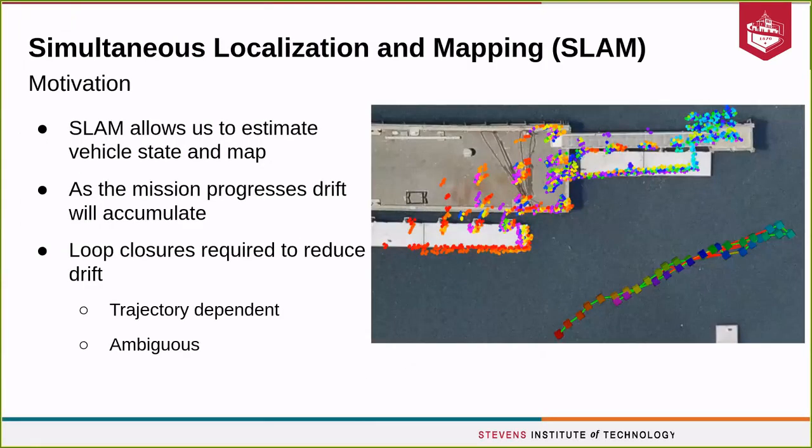First, let's talk about SLAM. SLAM allows us to estimate the vehicle state and map as we go. However, as the mission progresses, drift or error will accumulate in our state estimate. Loop closures are required to reduce drift. However, these are often trajectory-dependent and often ambiguous.